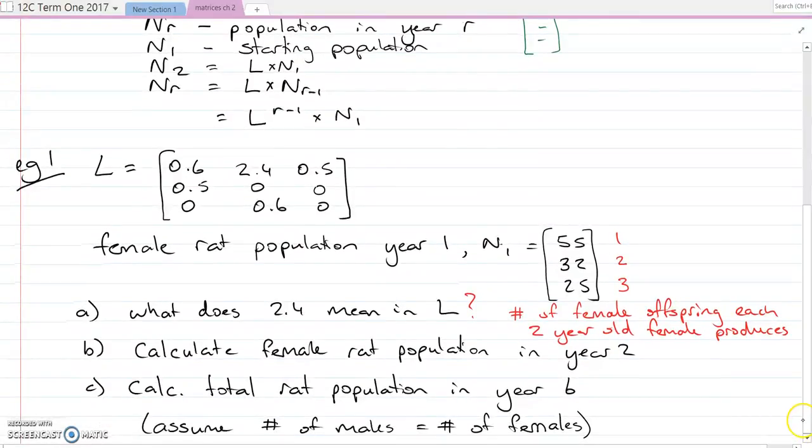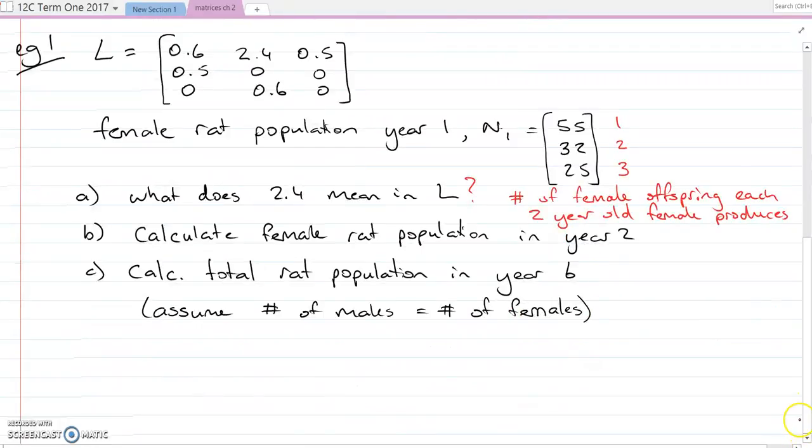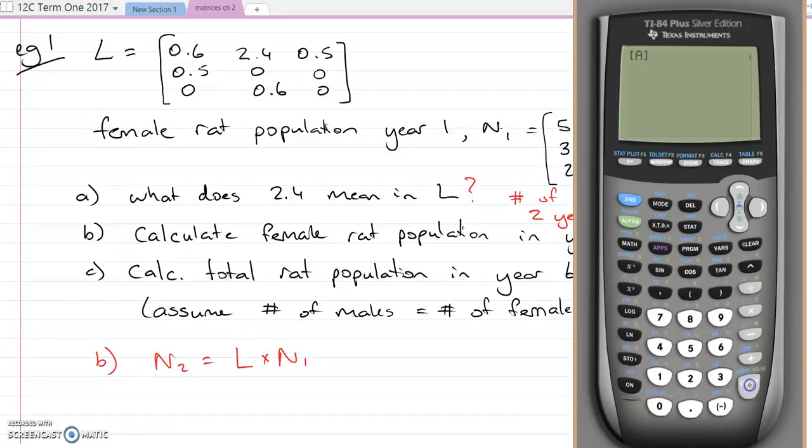The female rat population in year two, to do B, N2 is just L times N1. So just in your calculator, in my calculator I've entered the three by three matrix L in matrix A, I have entered the three by one matrix for the starting population in B.